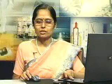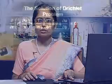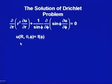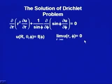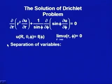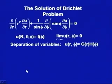Today we will learn how to solve this Dirichlet problem in spherical coordinates. We have the PDE in r and φ; the boundary condition is given on a sphere of radius R as u(r,θ,φ) = f(φ), independent of θ, and the other condition is u(r,φ) → 0 as r → ∞. We will take the solution using separation of variables. Since the solution depends on r and φ only, we take u(r,φ) as the product of two functions g(r) and h(φ).